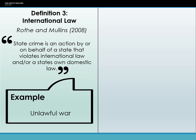The example they give is unlawful war — for instance, the Gulf War in the 1990s, where it came to light that countries went to war against Saddam Hussein based on falsified reports of weapons of mass destruction. Whether it was the US alone or the US with the United Kingdom that was complicit is still up for debate. This definition tries to bring together both the domestic and international elements of state crime.